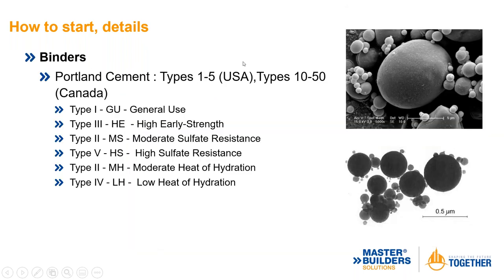For binders or cementitious materials: there's Type I through V in the USA, and in Canada the newer naming convention. Typically what we see — about 90 to 95 percent of shotcrete mixes I've worked with — is general use cement, and every once in a while we'll also see high early strength cement. Those are the two most common.